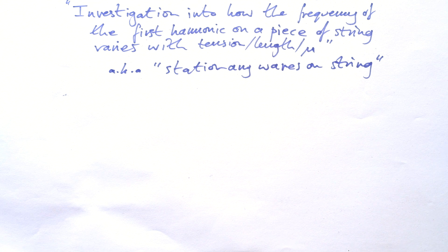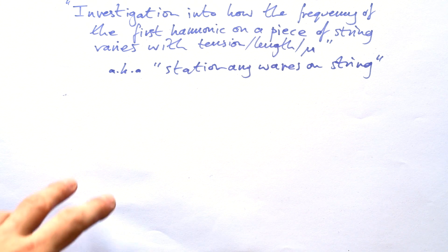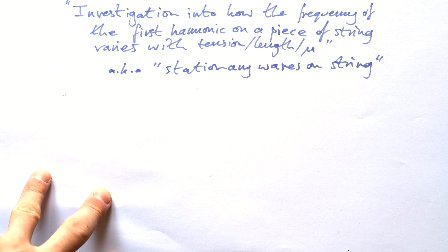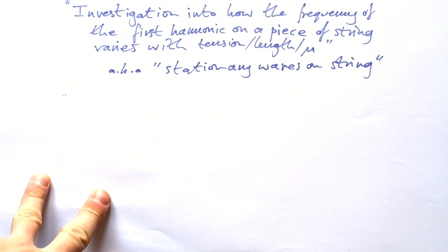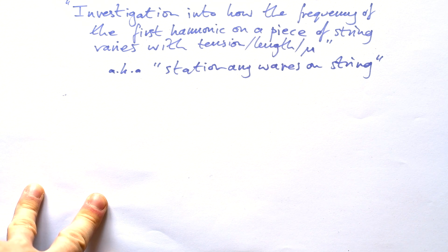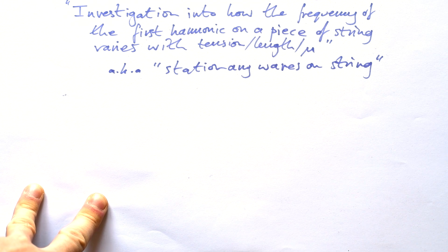Welcome to the first of my videos on the A-level physics required practicals. The first one a lot of people will do is the investigation into how the frequency of the first harmonic on a piece of string varies with tension, length, or mu — that's mass per unit length — also known as stationary waves on string.